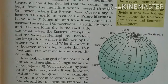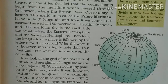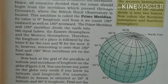They start the count from Greenwich, which is the British Royal Observatory. This is what is called the prime meridian. The value of the prime meridian is zero degree longitude. It is counted 180 degrees eastward and 180 degrees westward. The prime meridian and 180 degree meridian divide the earth into two equal parts.